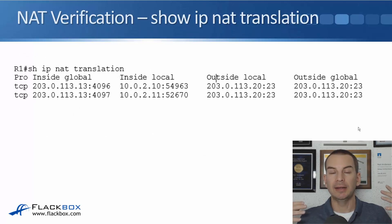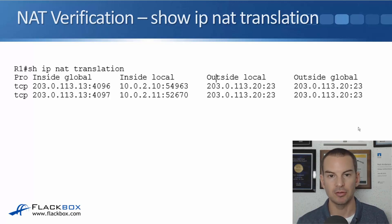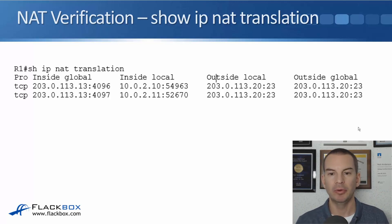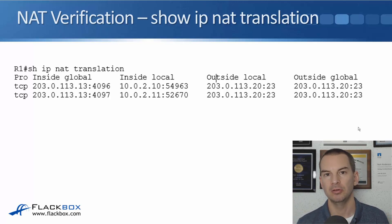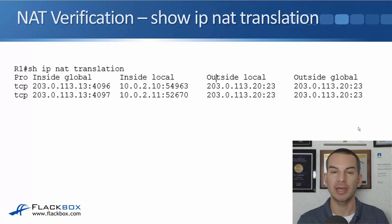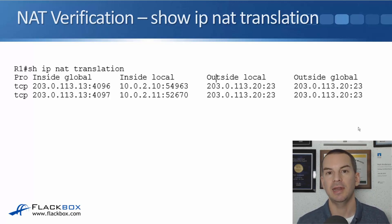Verification uses the same command as usual: show ip nat translations. The output shows all the port numbers being used, which is how the router knows which traffic belongs to which host. That was it for PAT — see you in the next lecture where we'll do a lab demo.